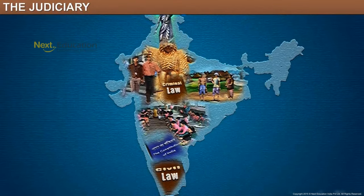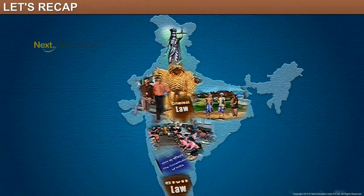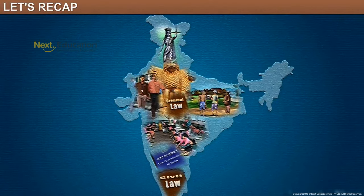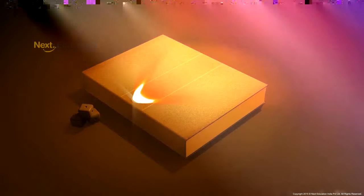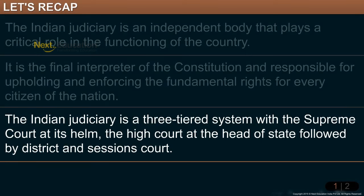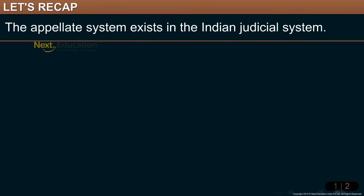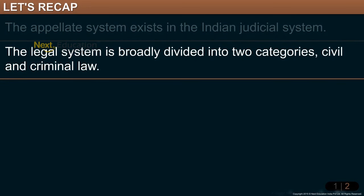Despite some of the problems of the judicial system in India, as an independent body, it has played a key role in the functioning of the country and protecting the fundamental rights of the citizens. We have now reached the end of this module on the Judiciary. In this module we learnt that the Indian Judiciary is an independent body, the final interpreter of the Constitution, and responsible for upholding and enforcing the fundamental rights for every citizen of the nation. It is a three-tiered system with the Supreme Court at its helm, the High Court at the Head of State, followed by District and Sessions Court. The appellate system exists in the Indian Judicial system, and the legal system is broadly divided into civil and criminal law.